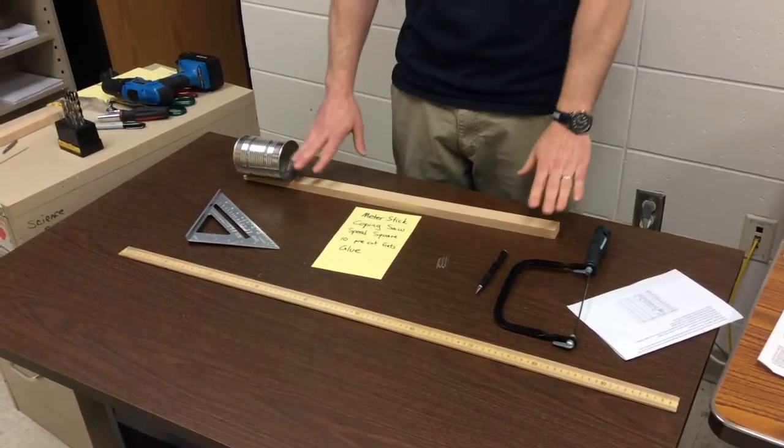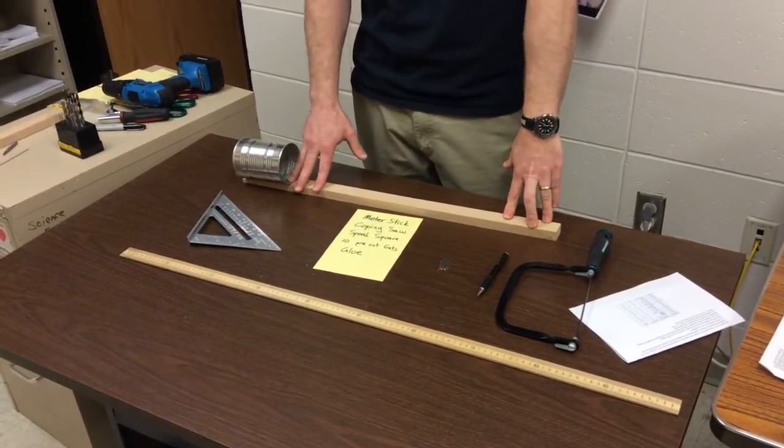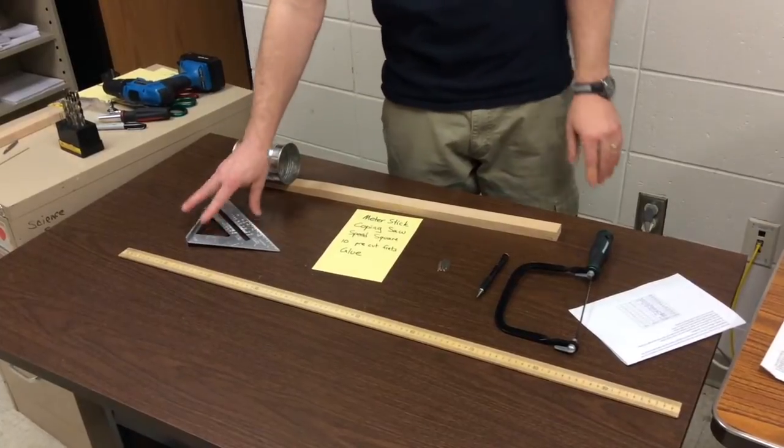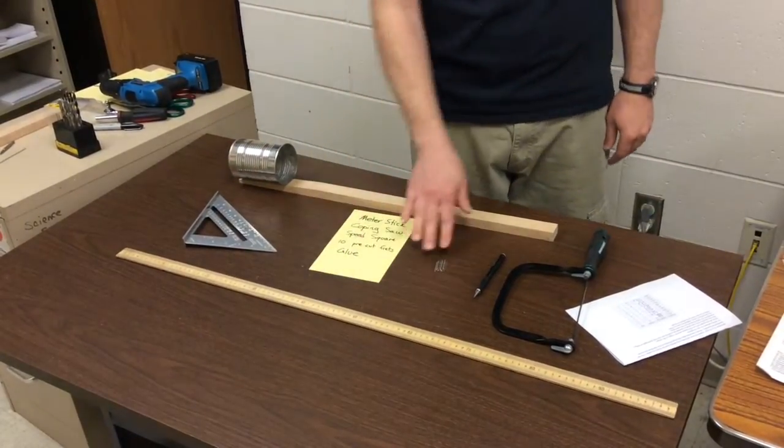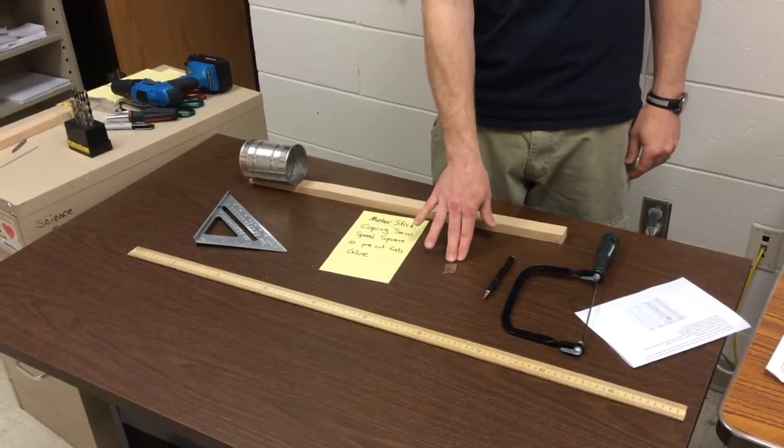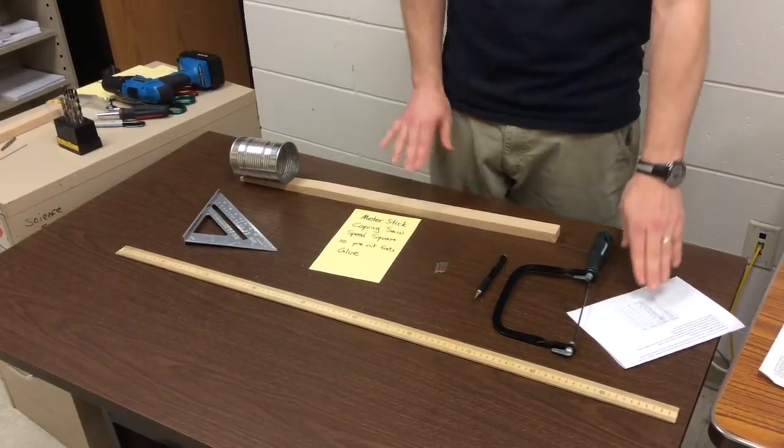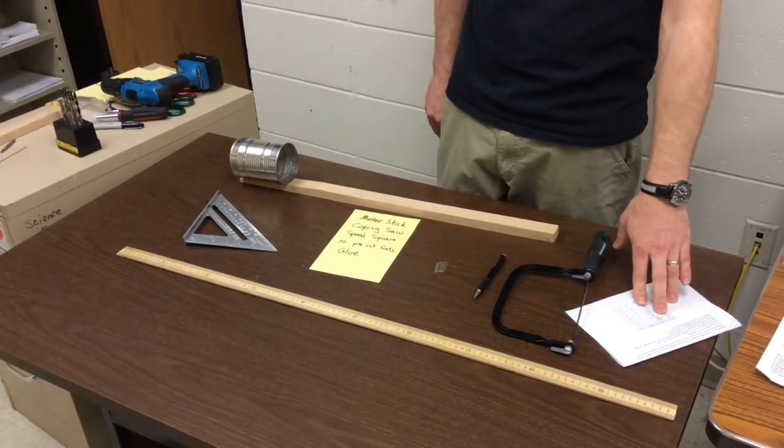For this project, you'll need your Kanjo with the can attached, a speed square, a coping saw, a meter stick, 10 pieces of pre-cut fret wire (each an inch long), and your measurements for where to place the frets.